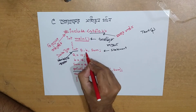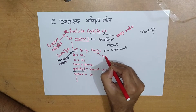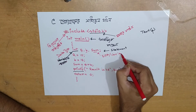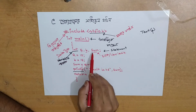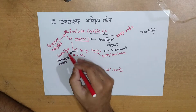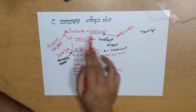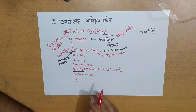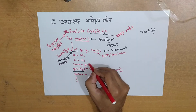The variables are a, b, and sum. This is a variable, this is a data type, this is a preprocessor directive, this is a header file, and this is an operator.